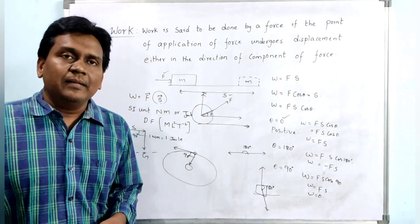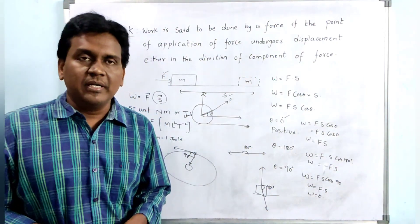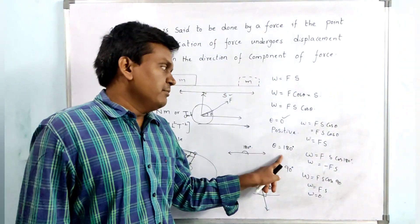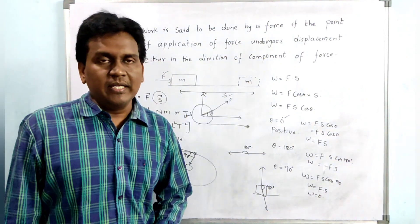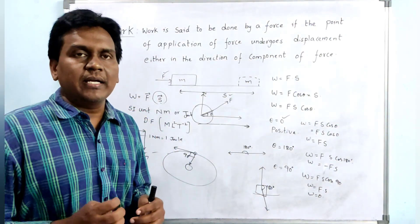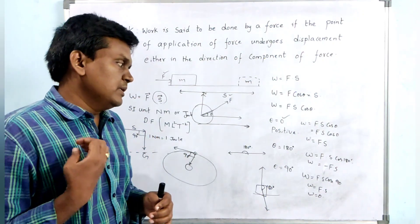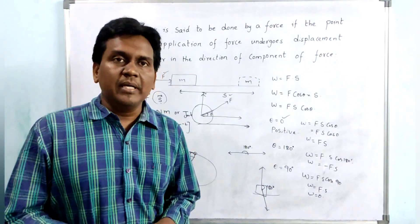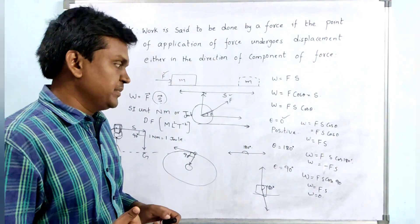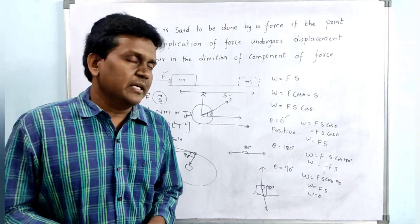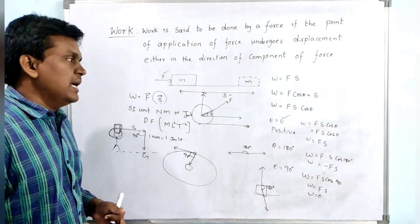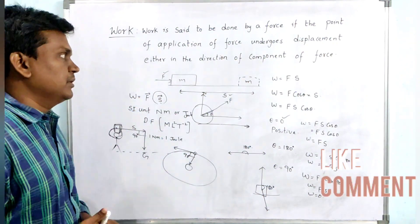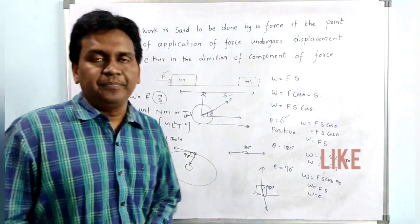To summarize: if the angle between force and displacement is zero, work done is positive and maximum. If the angle is 180 degrees, work done is negative. If the angle is 90 degrees, work done is zero. These are the three conditions based on the angle between force and displacement. This concludes the concept of work. Thank you.